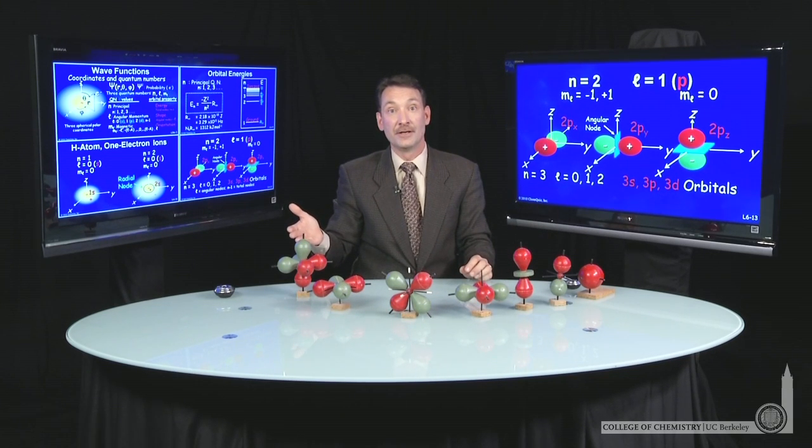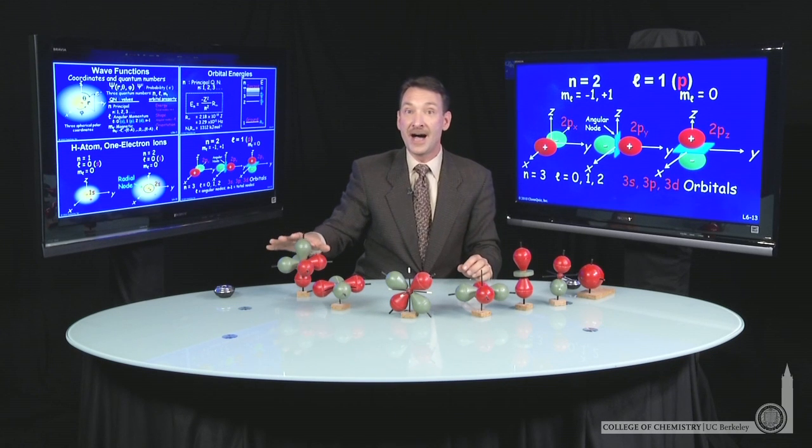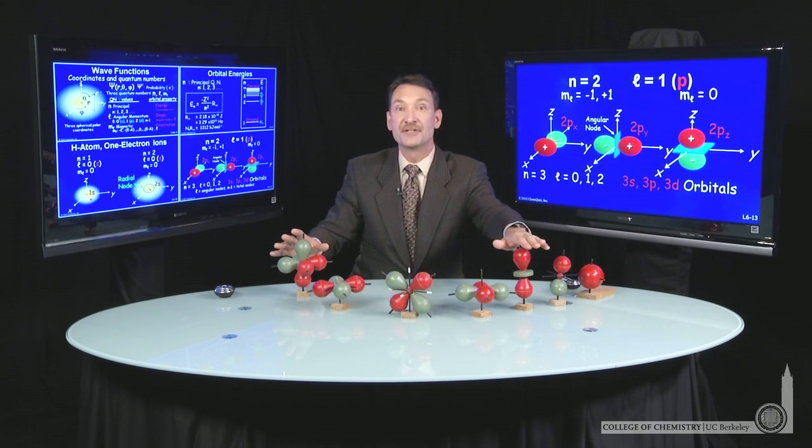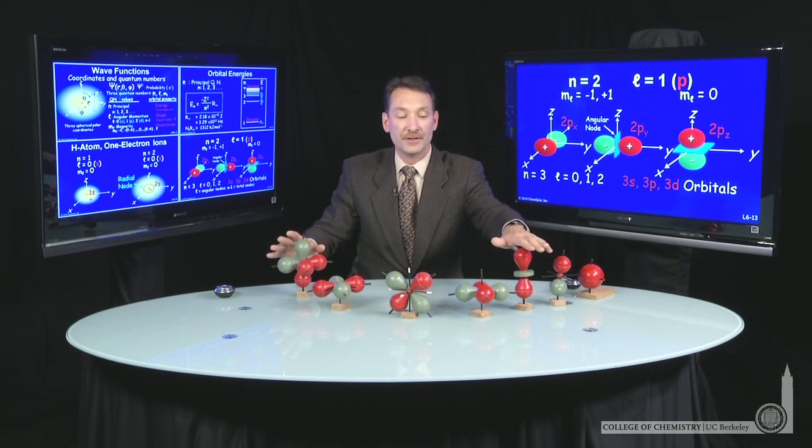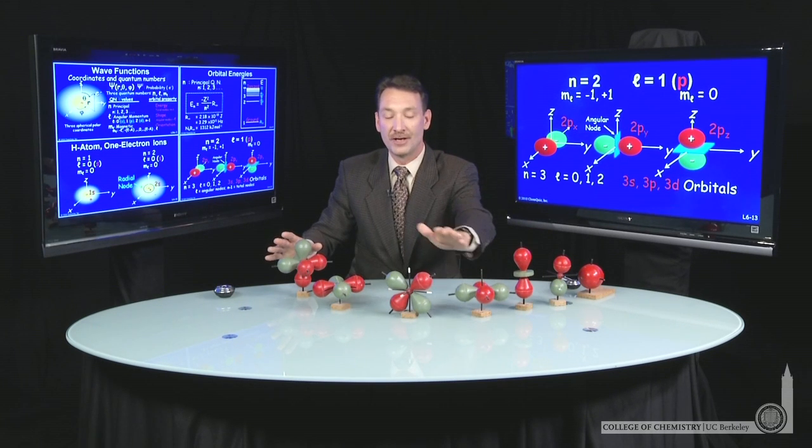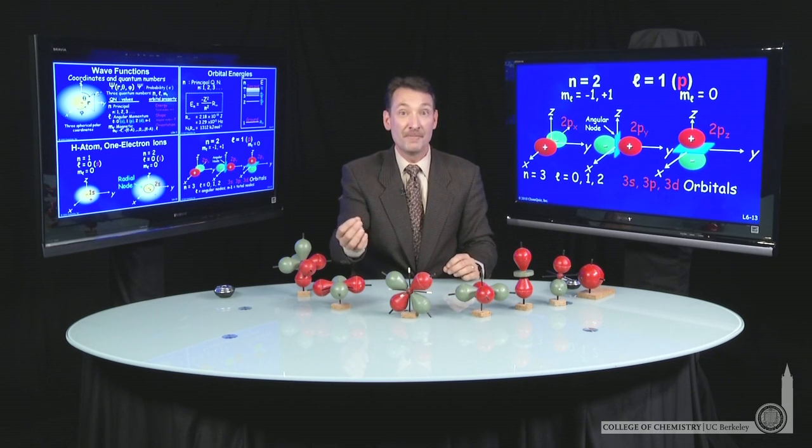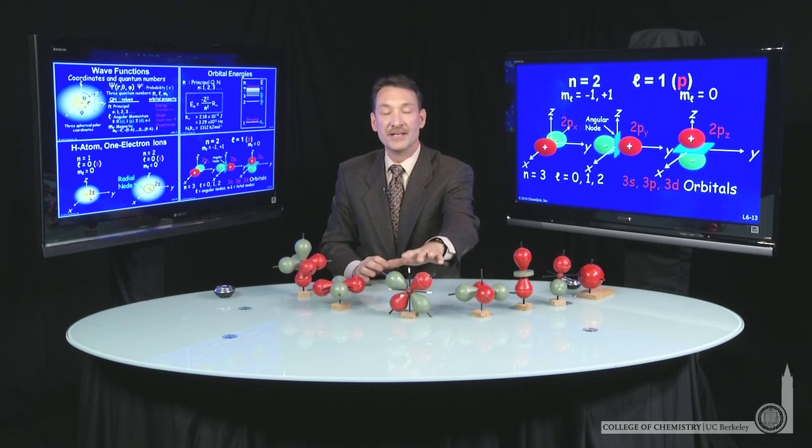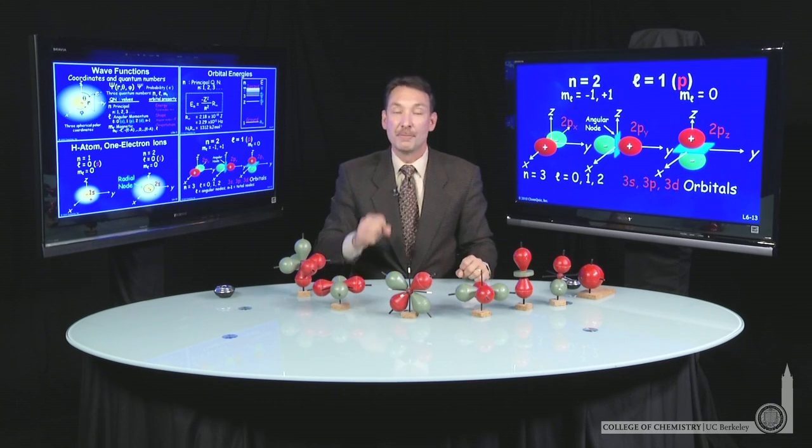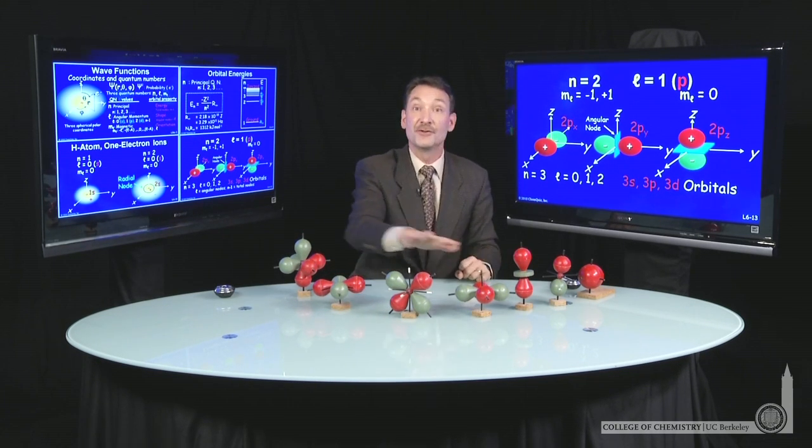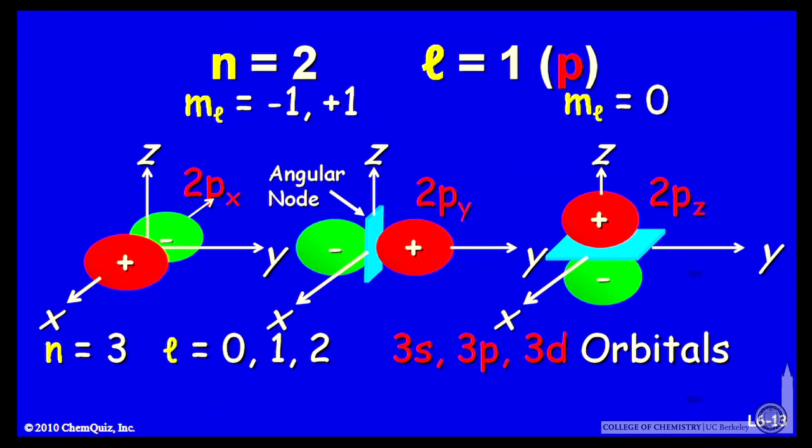And there's four other d orbitals that make up the set of five from m sub l minus 2, minus 1, 0, 1, and 2. And of course, we do the same thing we do with the p's. So that means the actual m sub l value is a combination that gives you these various five orbitals. But five values of m sub l have to give you five energy equivalent orbitals. That makes up the three d orbitals.